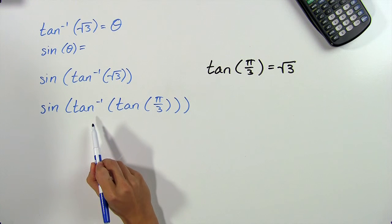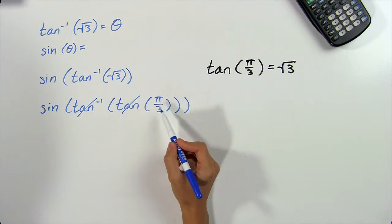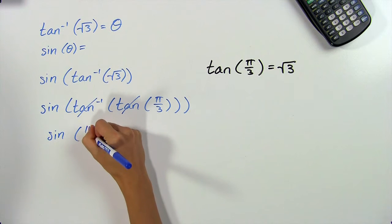This might look a little long, but we can easily simplify. Since the arc tangent of a tangent is just the angle itself, both of those cancel out, and we're left with the sine of pi thirds.